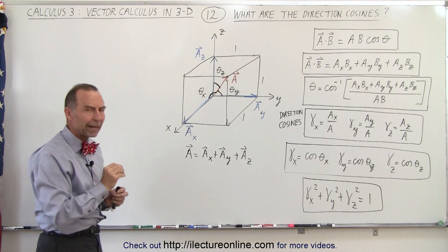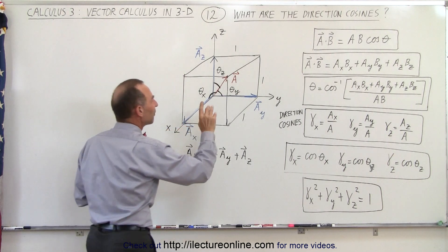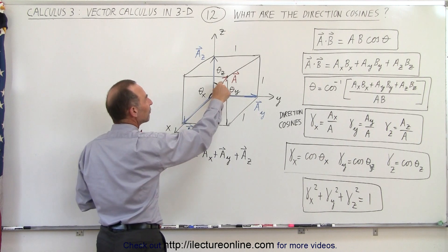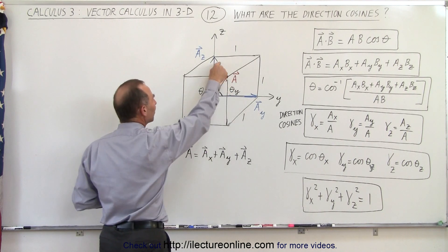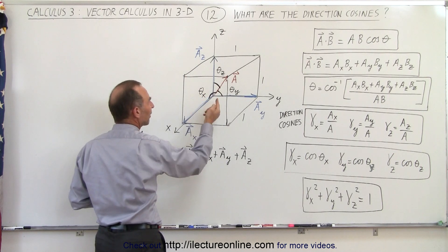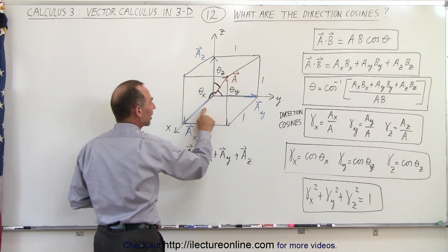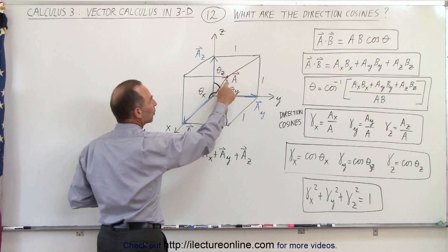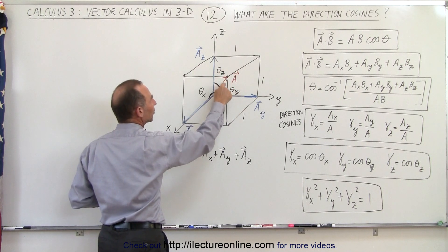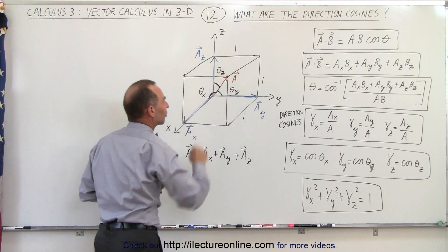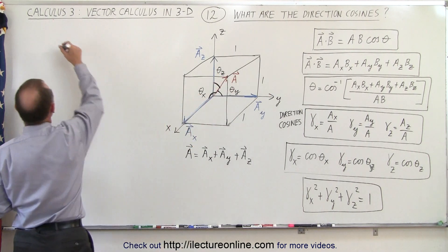Now what do we mean by the direction cosines? First, let's define the three angles between vector a and the coordinate axes. Theta sub x is the angle between the vector and the x-axis, theta sub y is the angle between the vector and the y-axis, and theta sub z is the angle between the vector and the z-axis. We're going to define the cosine of those angles.